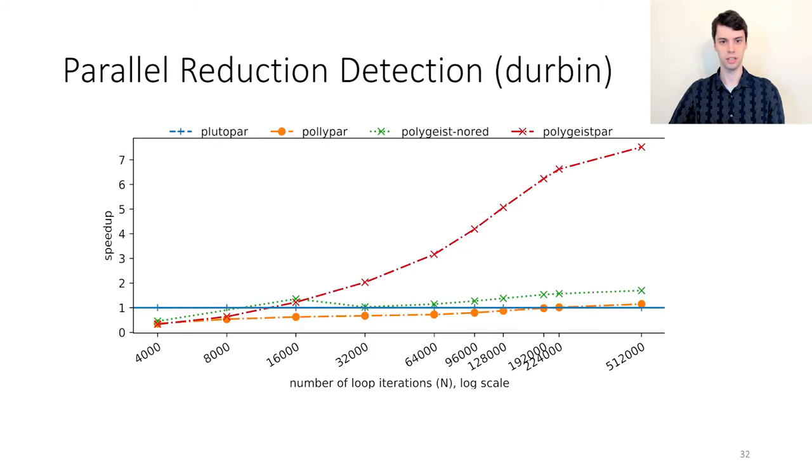Diving deeper into parallel reduction detection, and the Durbin test in particular, we see that Polygeist is the only tool able to achieve a sizable speedup when we increase the number of iterations. We therefore hypothesize that the parallel slowdown on the default number of iterations occurs because the extra overhead of creating and synchronizing parallel threads outweighs the benefits of the additional parallelism. When reduction detection is turned off, Polygeist follows a similar trend as Polly. However, Polygeist starts to see parallel speedup around 16,000 iterations, whereas Polly requires 224,000 iterations. Pluto fails to parallelize the program at all and shows no speedup.